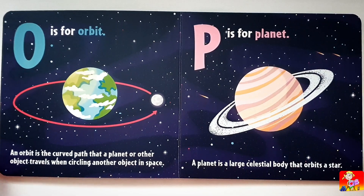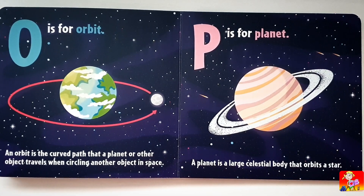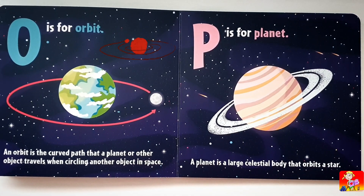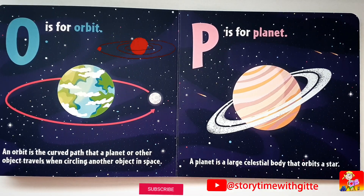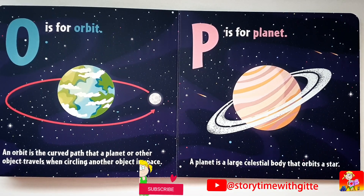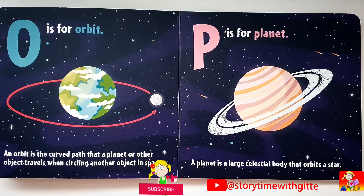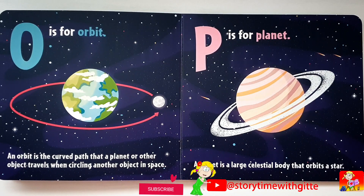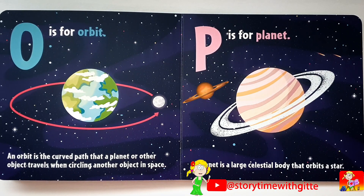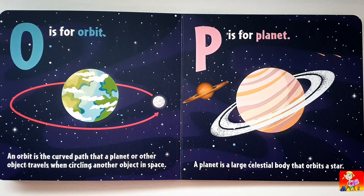O is for Orbit. An orbit is the curved path that a planet or other object travels when circling another object in space. P is for Planet. A planet is a large celestial body that orbits a star.